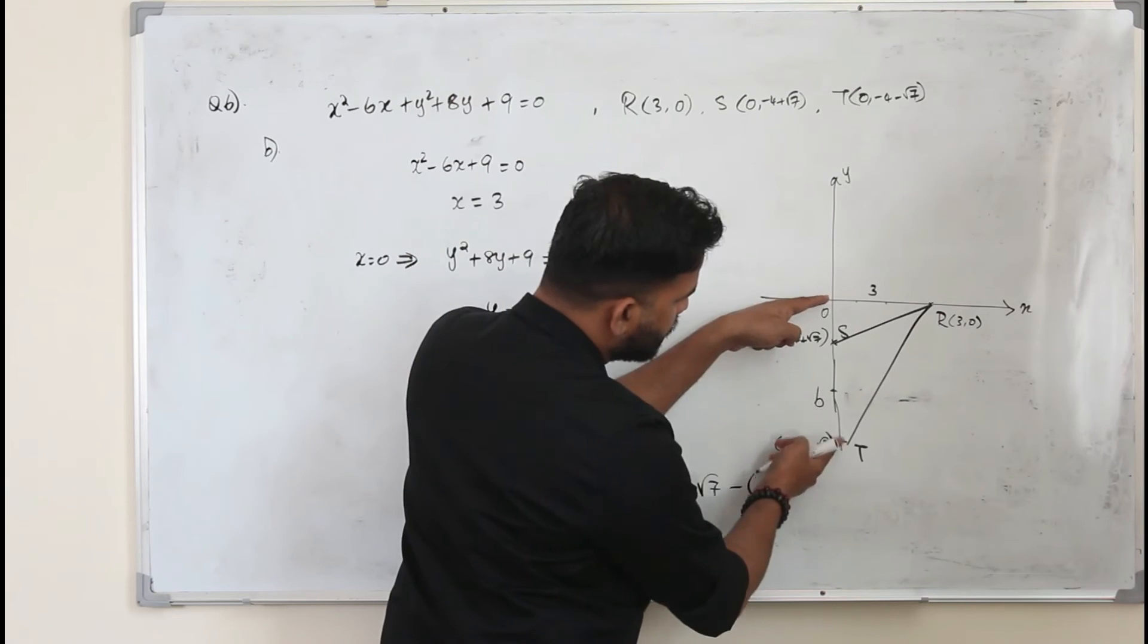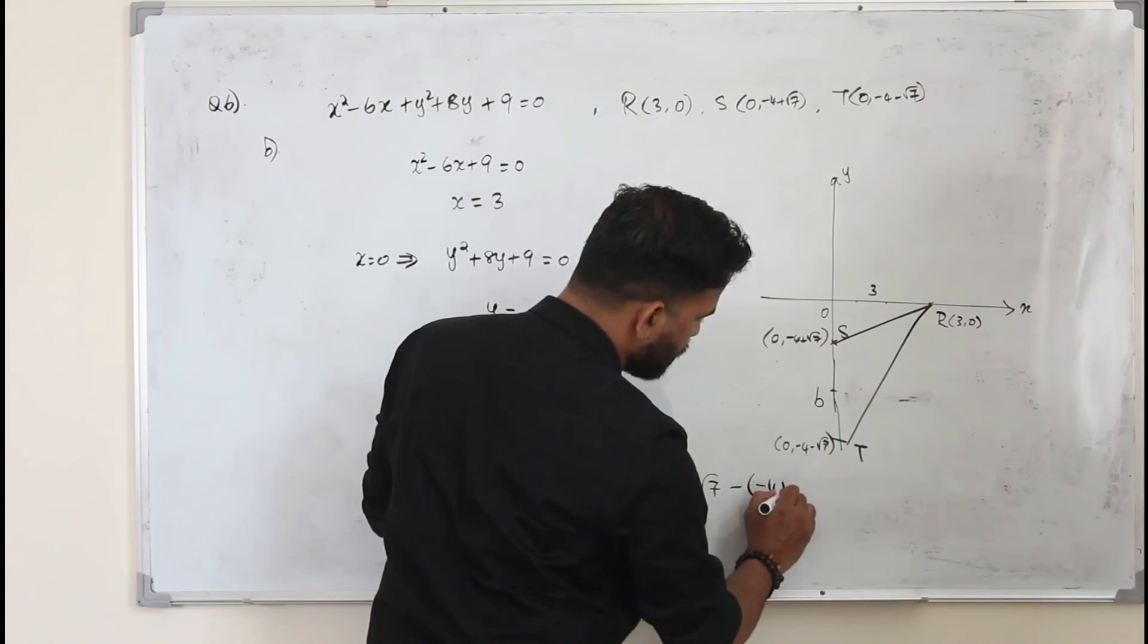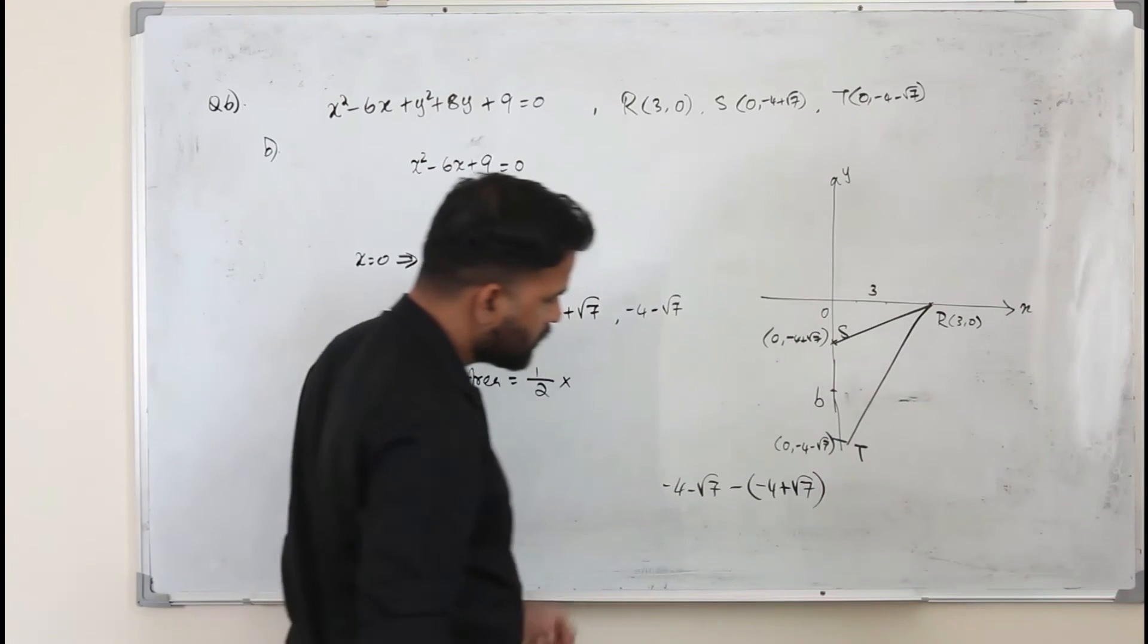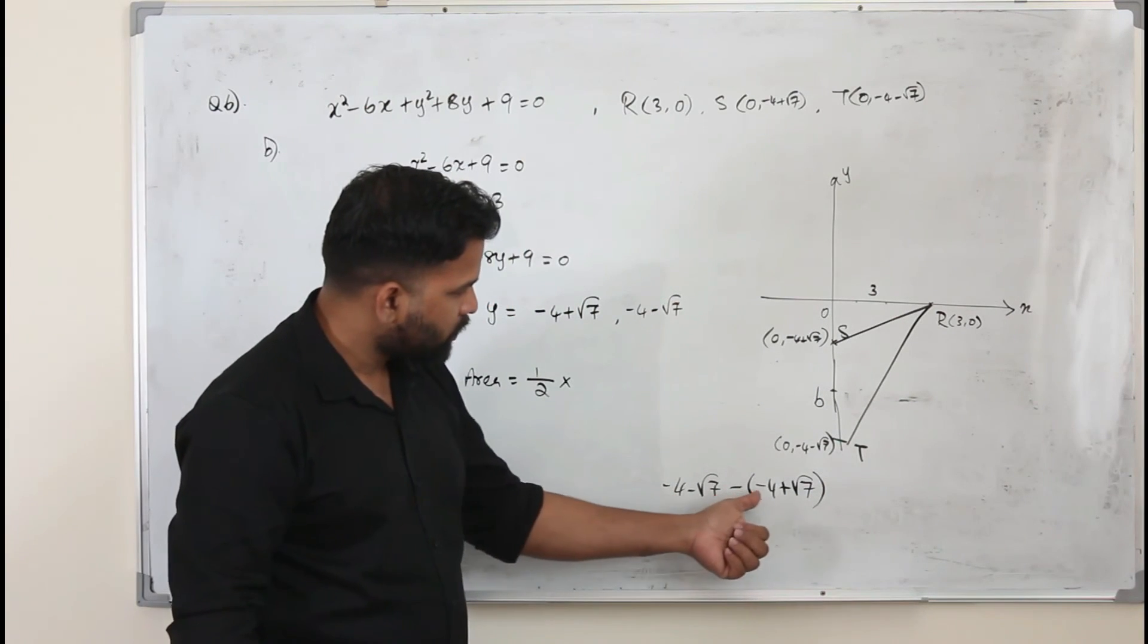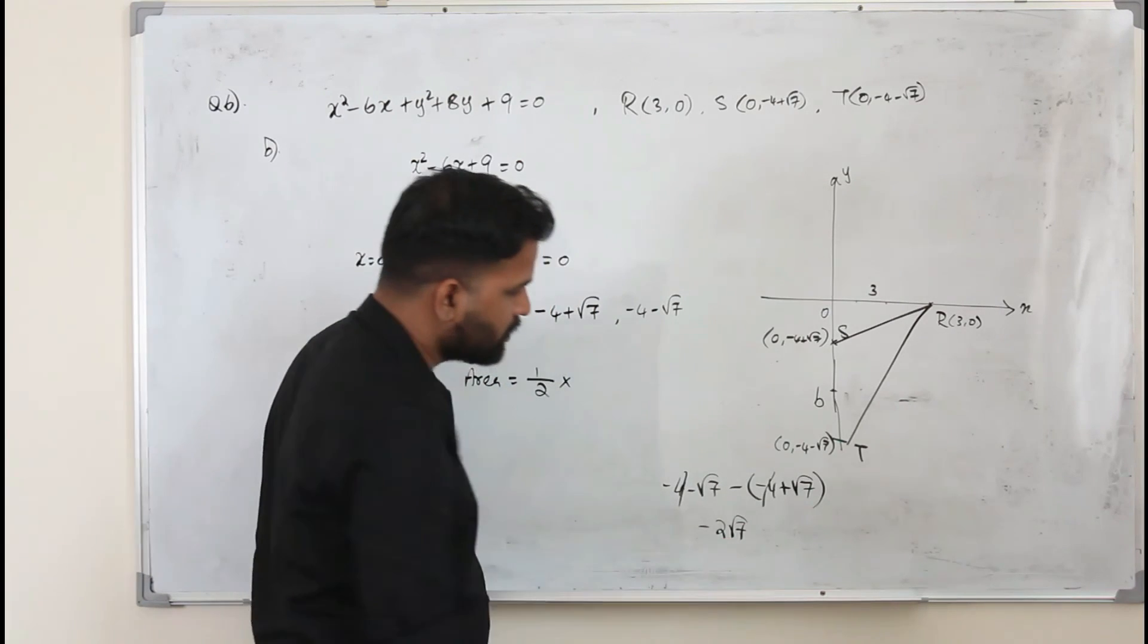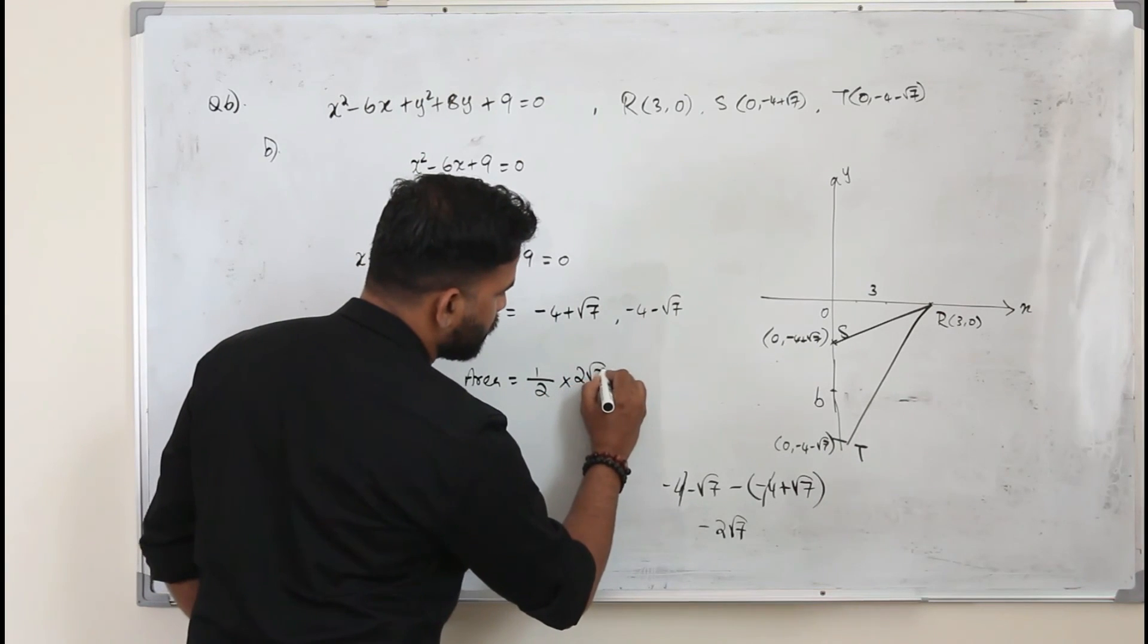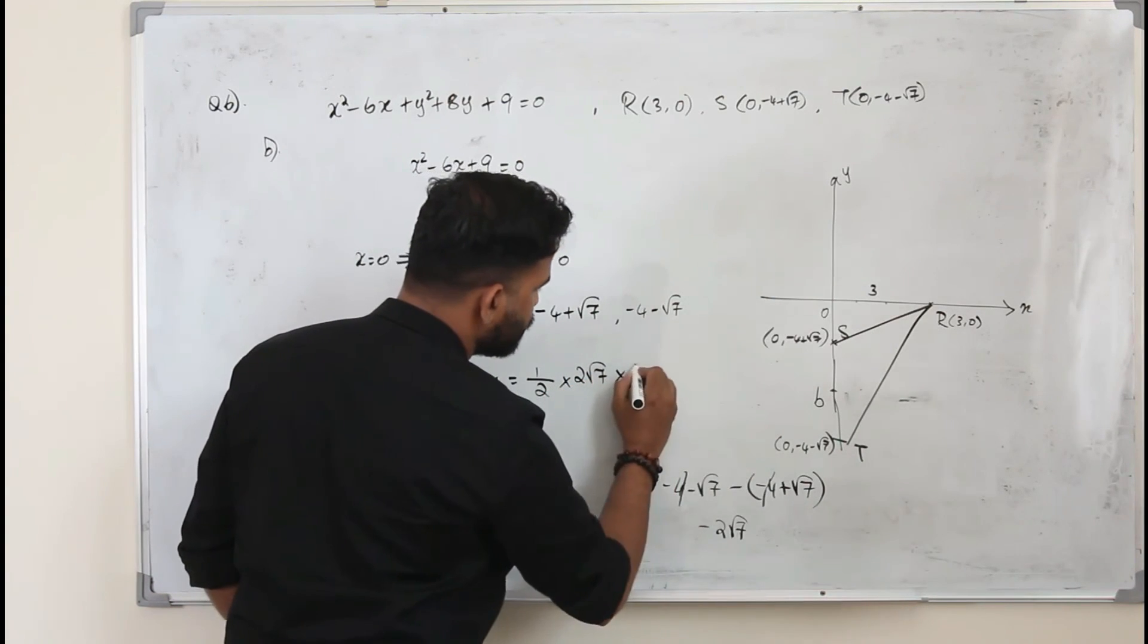This length is minus 4 plus root 7. So I think minus 4 plus 4 will be cancelled. You have minus 2 root 7. So the length can't be a negative number. Take it as 2 square root of 7 times height is 3.